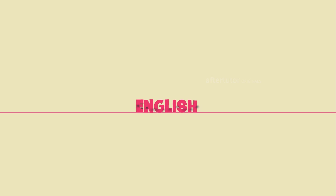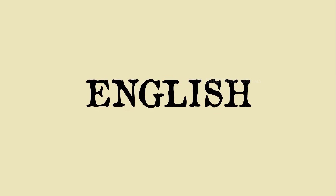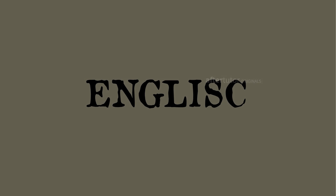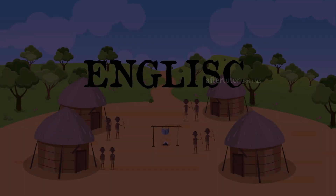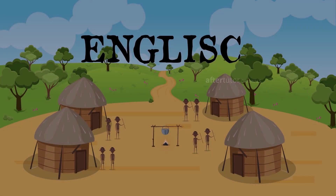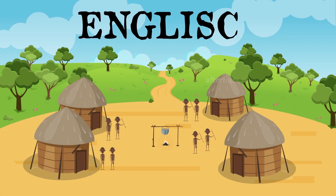But how is it named as English? In the olden era of English, the word English is pronounced as Inglesque, as it is interrelated to the Angle tribe's place called Angle, which is the origin of the Angle Germanic tribe.